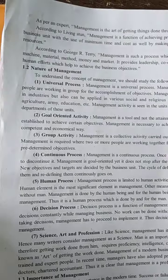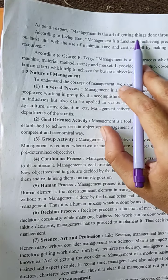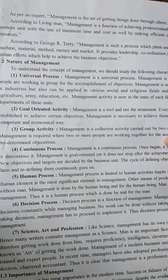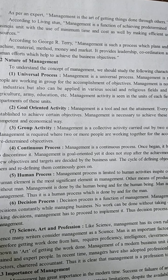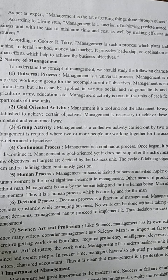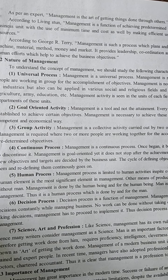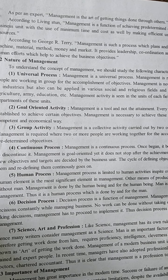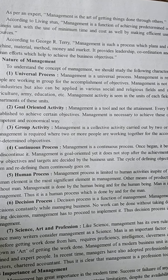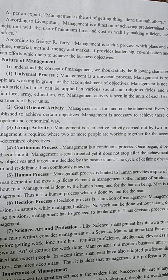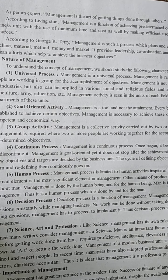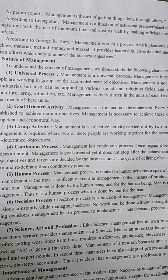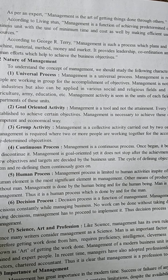Let's see the definition by various experts. Management is the art of getting things done through others. If you are going to do each and everything on your own, you cannot achieve your objective. A manager's job is to get the work done through others. Management is a function of achieving predetermined objectives of a business unit with the use of minimum time and minimum cost, as well as by making efficient use of available resources. Maximum use of resources in minimum time — this is called management.